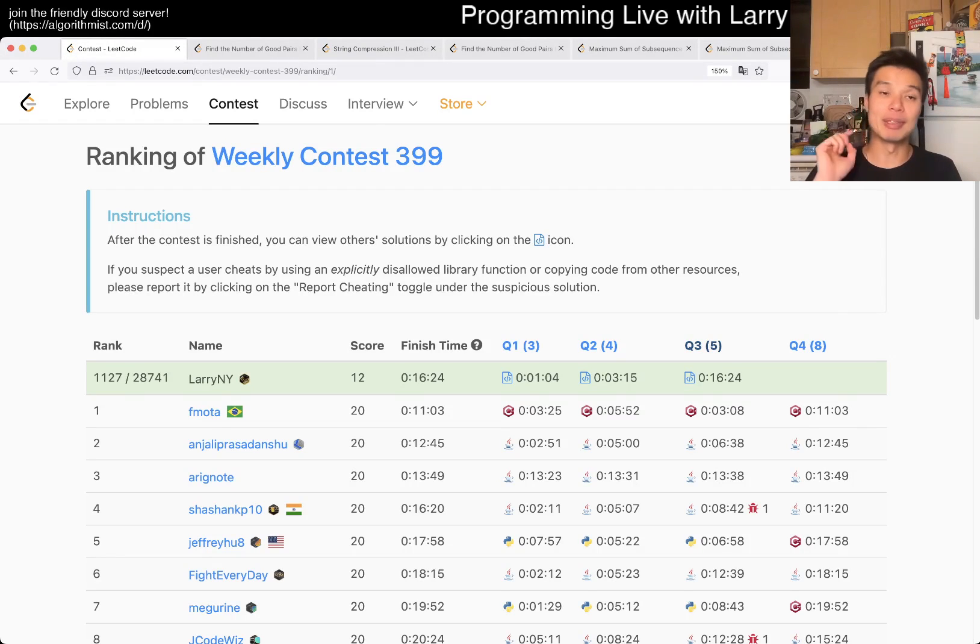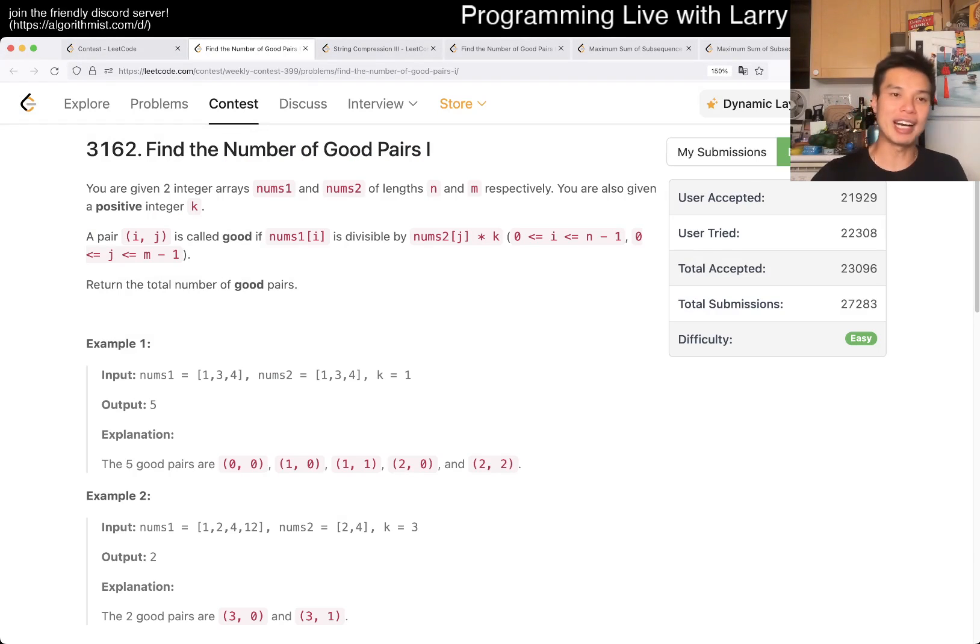Hey everybody, this is Larry. This is me going for Q1 of the Weekly Contest 399, find the number of good pairs 1. Hit the like button, hit the subscribe button, join me on Discord, let me know what you think about this one.